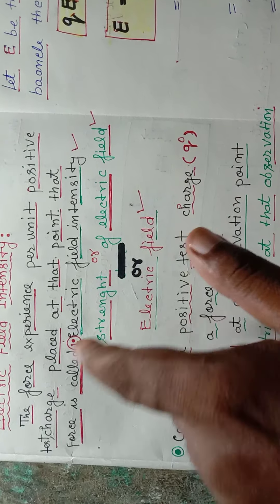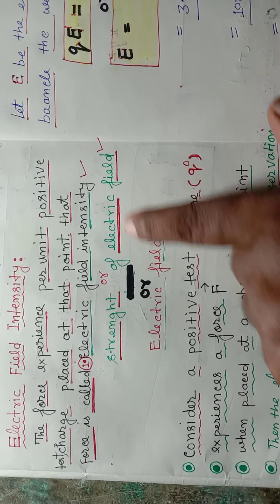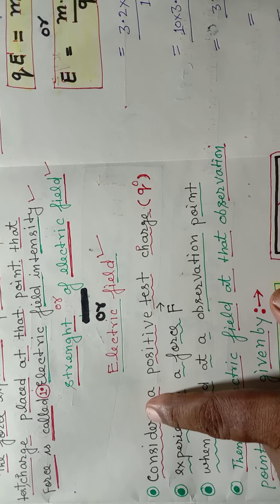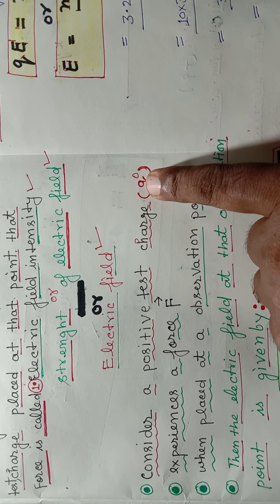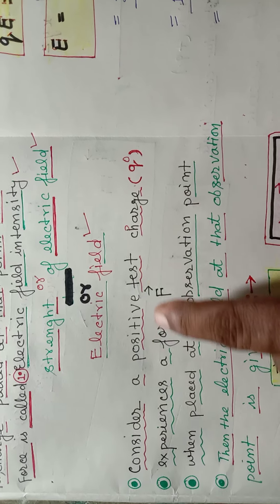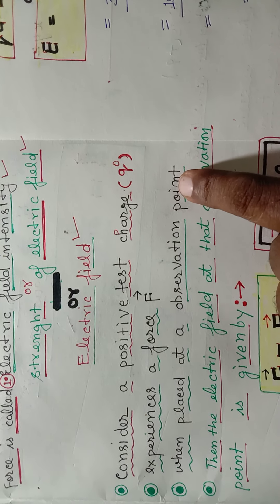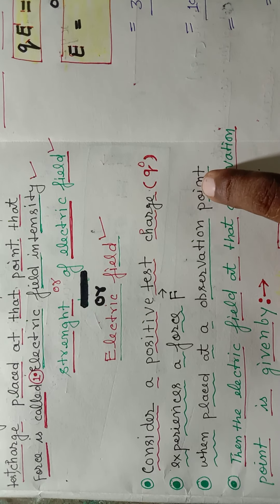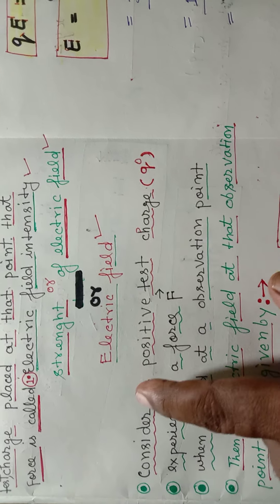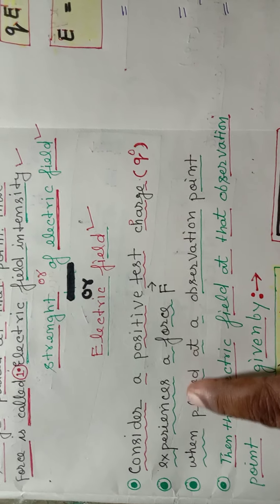Electric field — हम consider करते हैं कि कोई positive charge है। कोई positive charge की q₀ है, वह experience कर रहा है force F। वह placed at observation point है — ऐसी point पर हम उसको place कर रहे हैं जहाँ पर हमको observe करना है कि electric field intensity क्या है। तो हम पहले consider करते हैं कि positive test charge q₀ है, वह जो है force experience कर रहा है, placed at observation point पर।